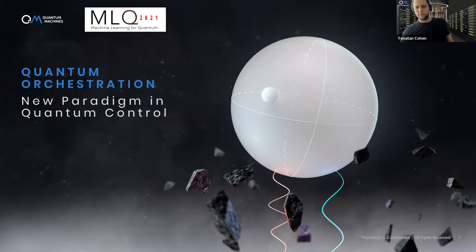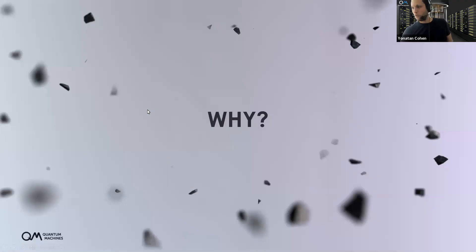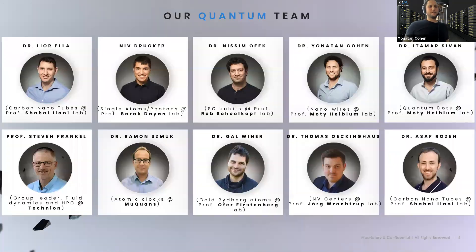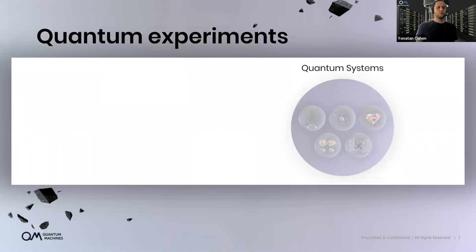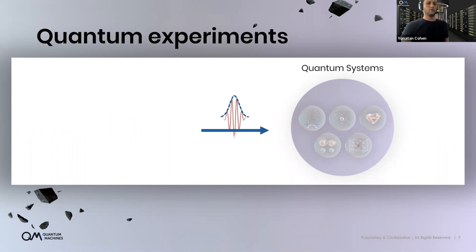The best place to start from is asking why — why do we need a new paradigm in quantum control, and why did we start Quantum Machines? We are a bunch of physicists and engineers. We have people on the team who worked on almost any quantum system out there: quantum dots, NV centers, superconducting qubits, trapped ions, neutral atoms, etc. We all know that to run interesting experiments on these systems, we need to orchestrate a very complicated sequence of control and measurement signals.